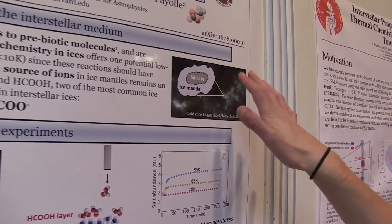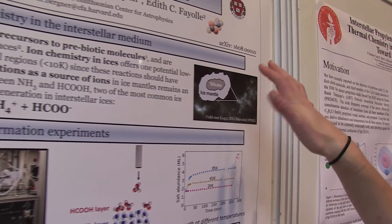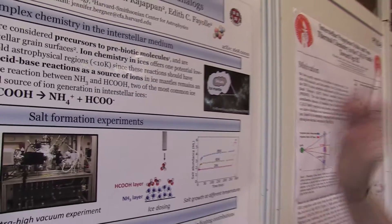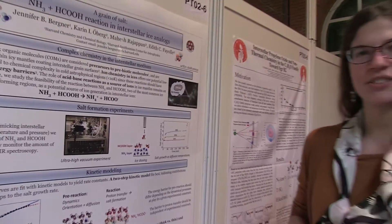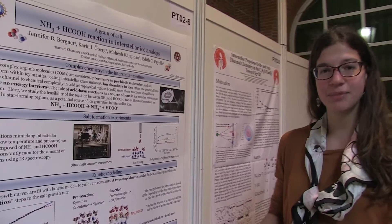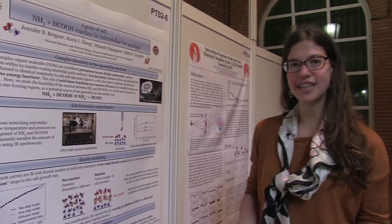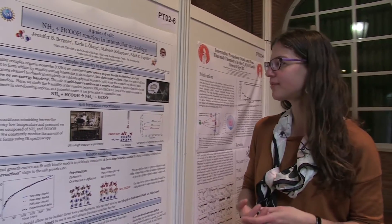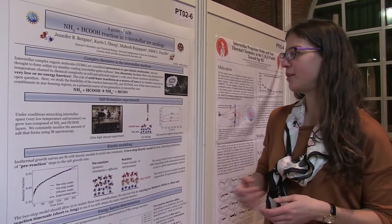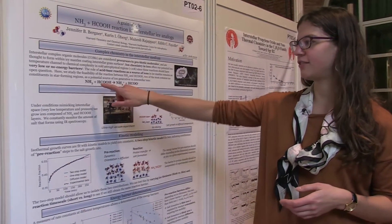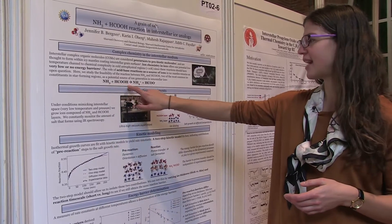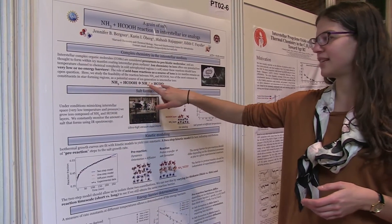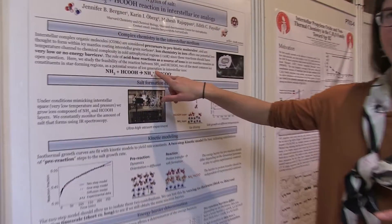This project was trying to understand one possible way of getting chemistry to happen at temperatures as low as 10 Kelvin. We were doing a reaction between ammonia and formic acid to form this salt pair.